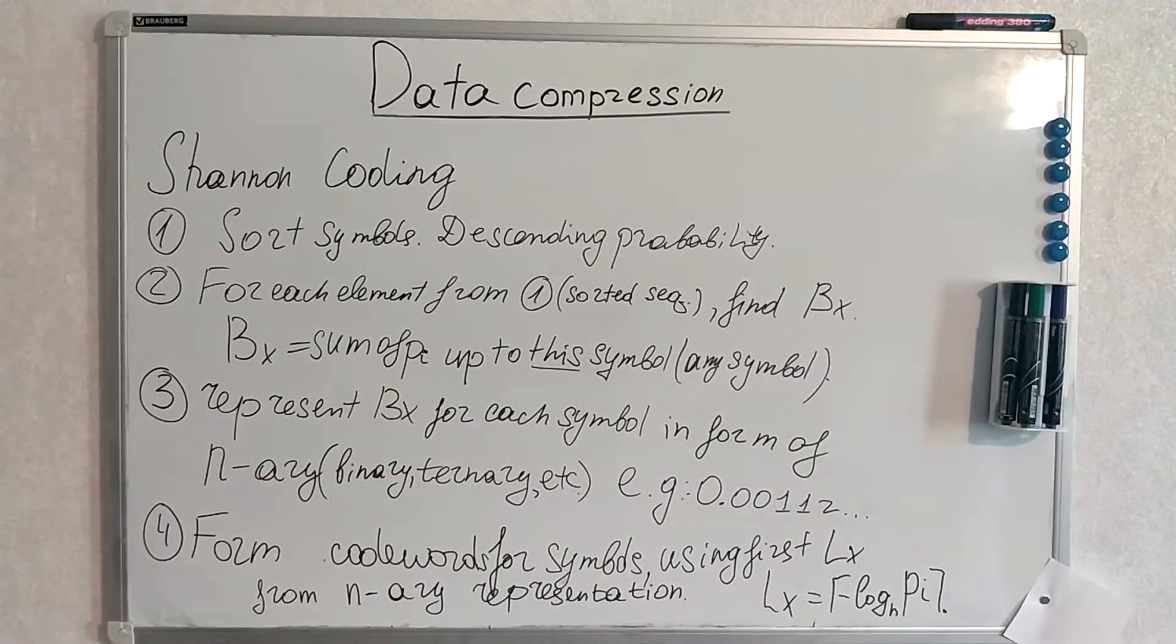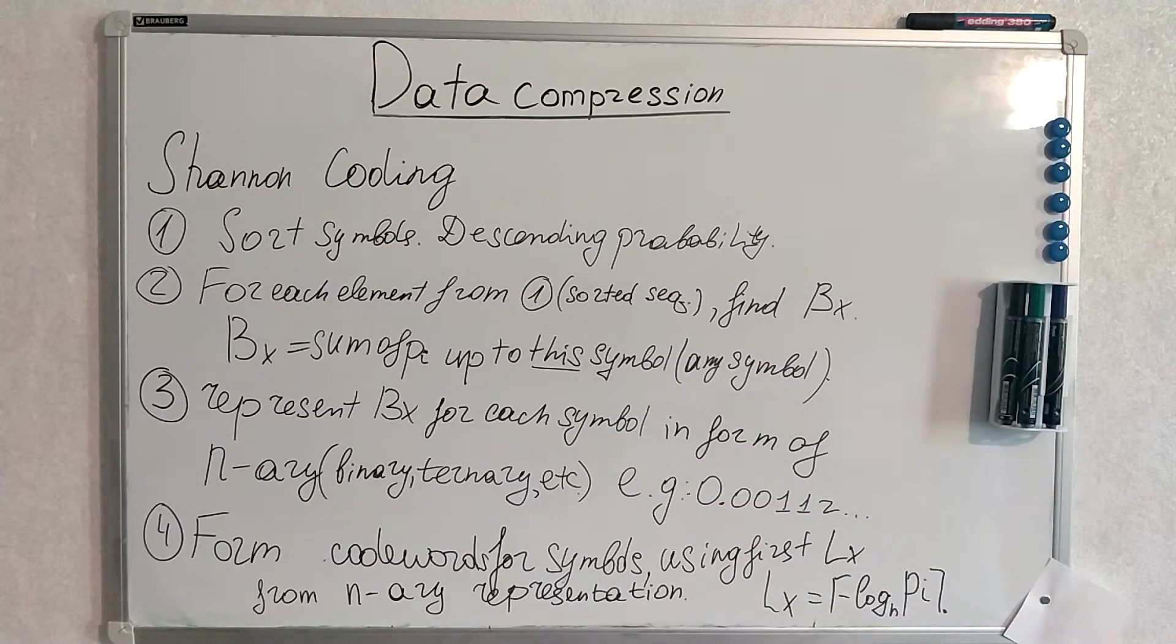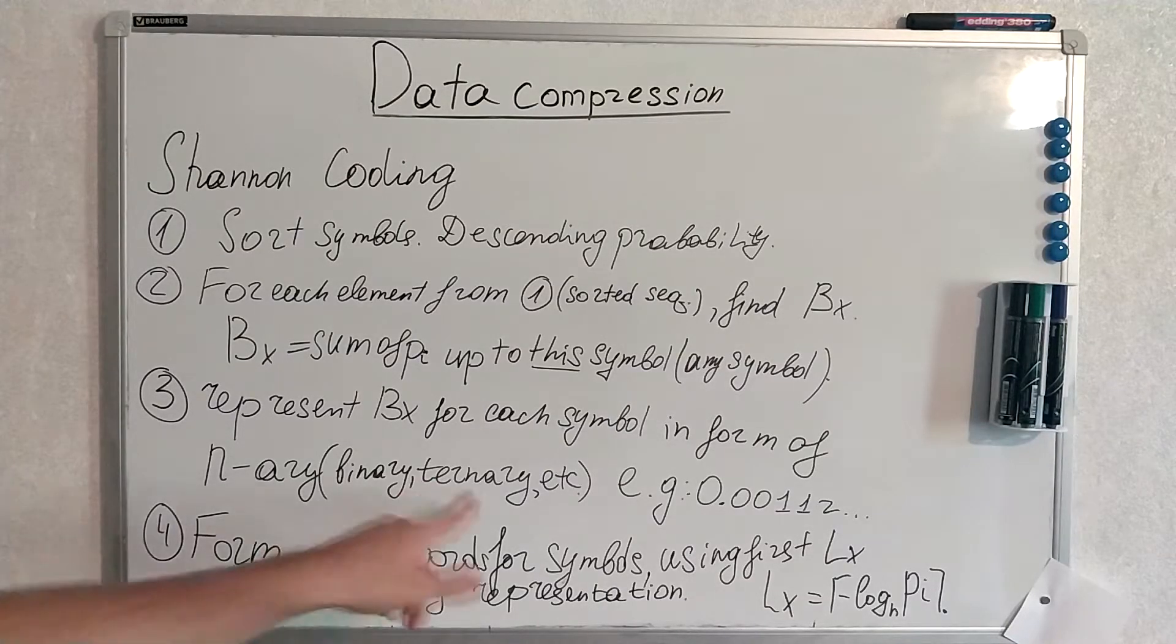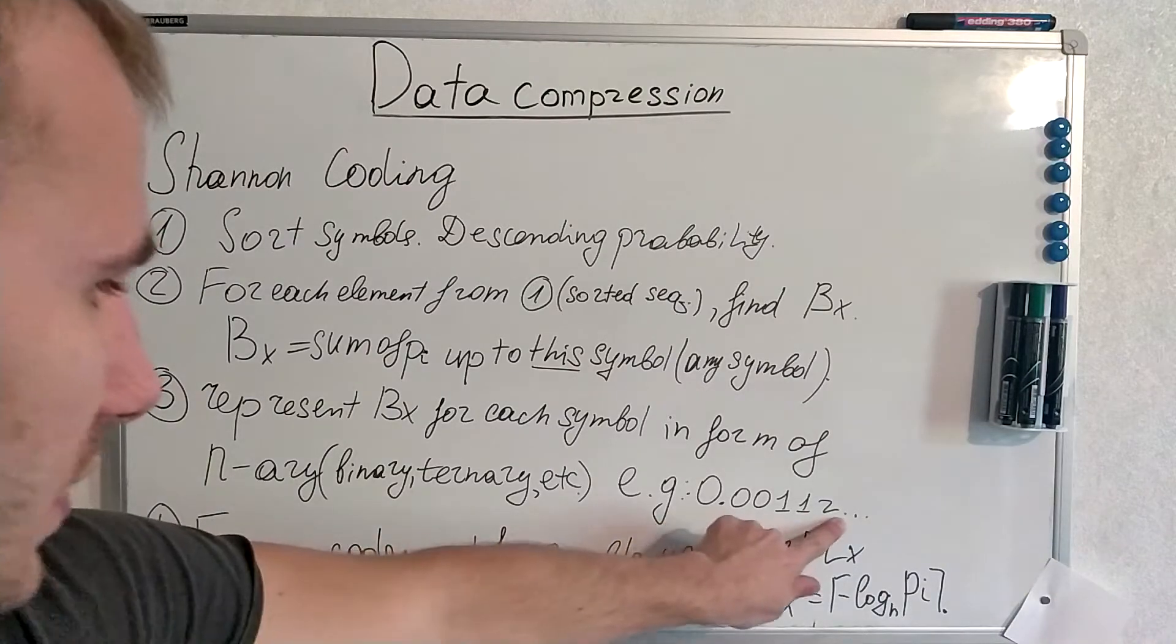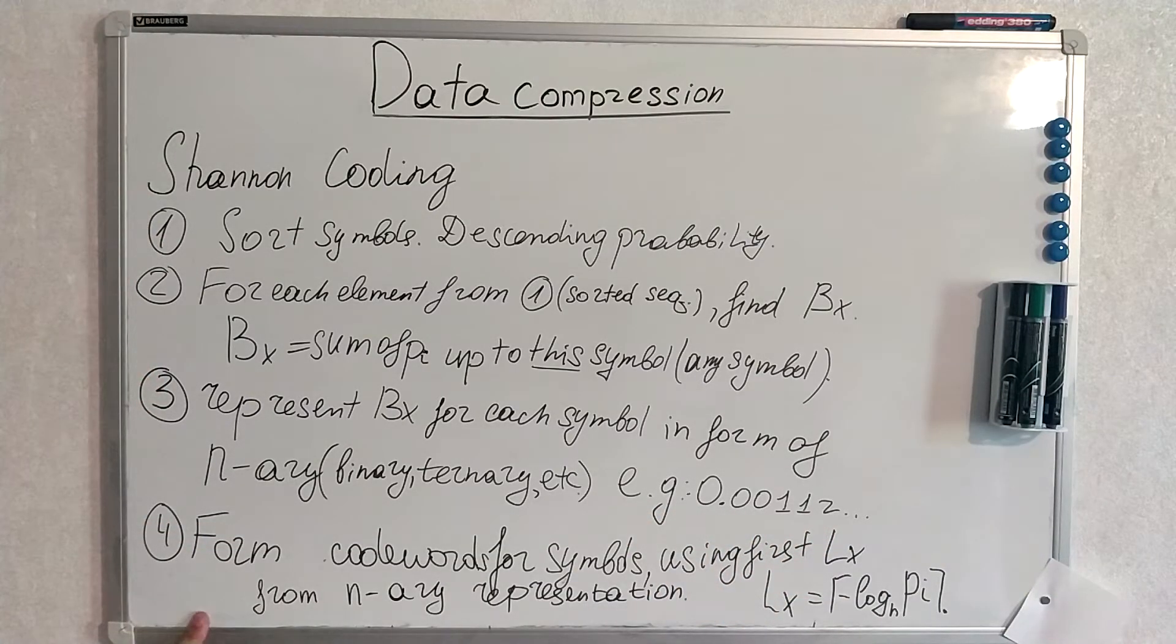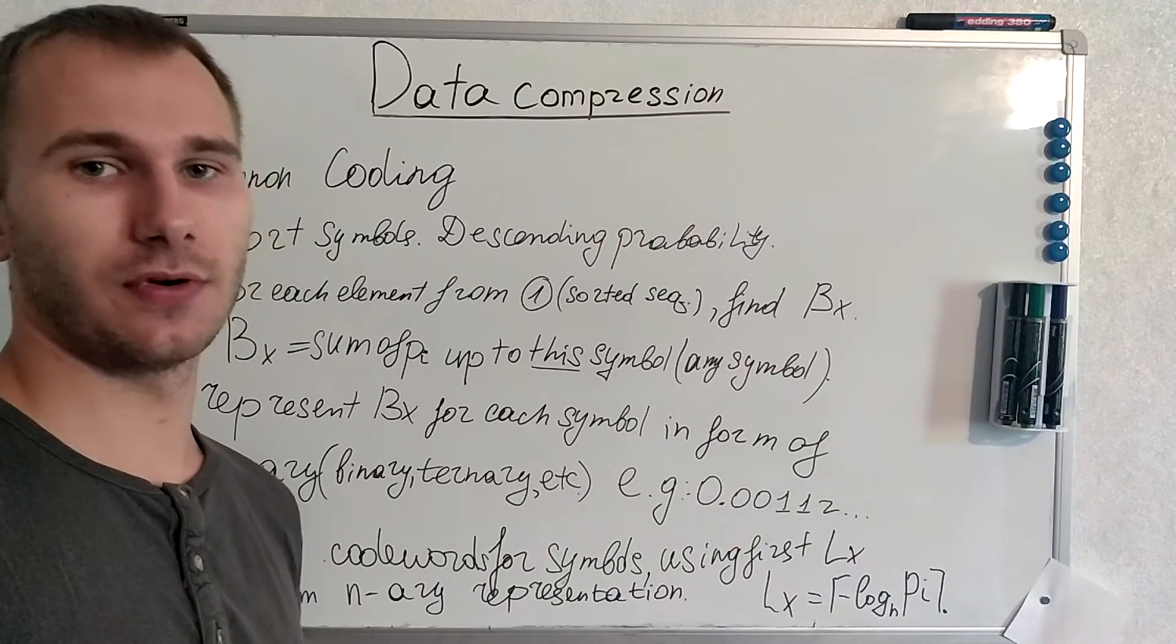One last time let's generalize it to an algorithm. Step by step you can pause the video and write it down if you want. First of all we sort symbols. Then for each element we find Bx. Then we represent Bx for each symbol in our arity system. For example binary, ternary, etc. And then we form code words for symbols using first Lx from an array representation. We ignore the first 0 which stands before the dot.